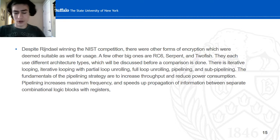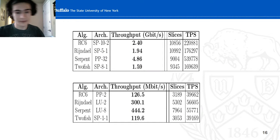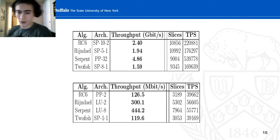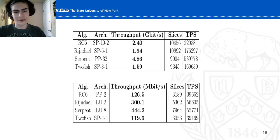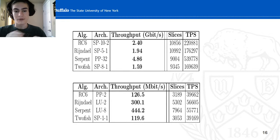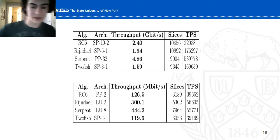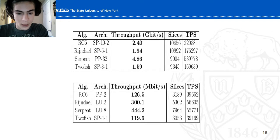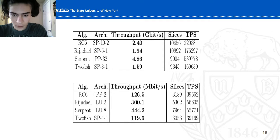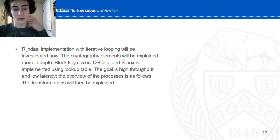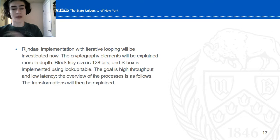There are strategies for efficiency which will be discussed shortly. On top is non-feedback mode, and on the bottom is feedback mode. Feedback mode is preferred, despite being slower, because it's more difficult to crack — the output feeds back as input, essentially creating a more difficult chain. As you can see in the table, Rijndael had high throughput with the lookup method. The issue with Serpent was that it required too many slices for the FPGA. Rijndael: block size 128, key size 128, S-box implemented using a lookup table, high frequency, low latency.